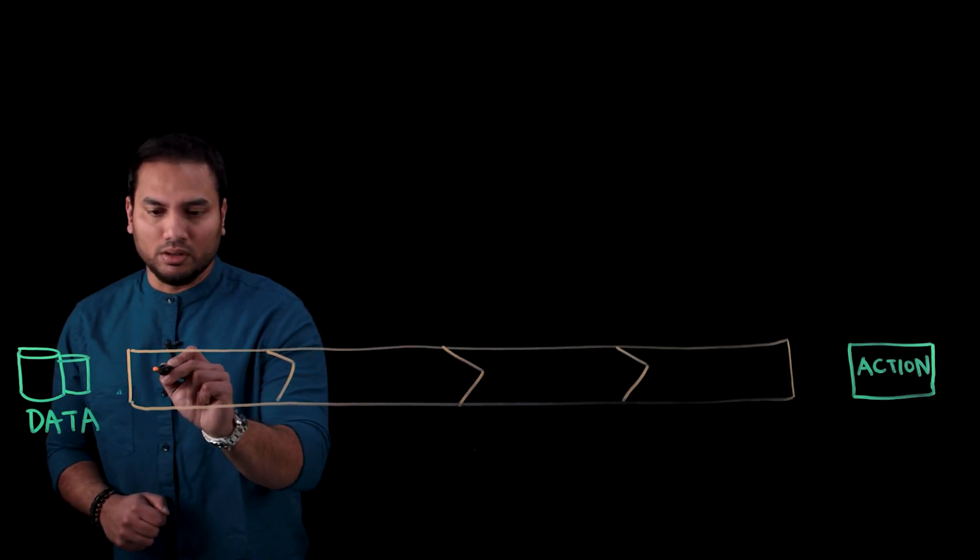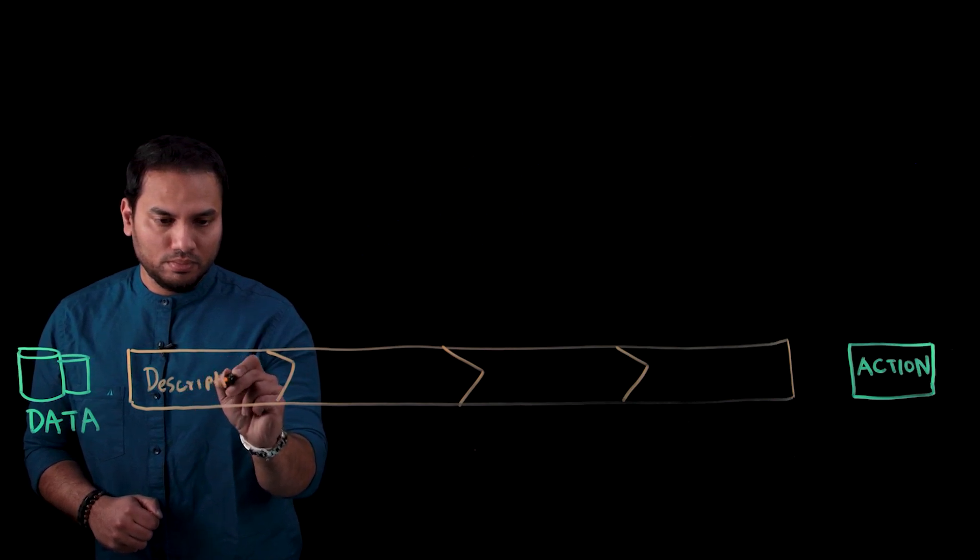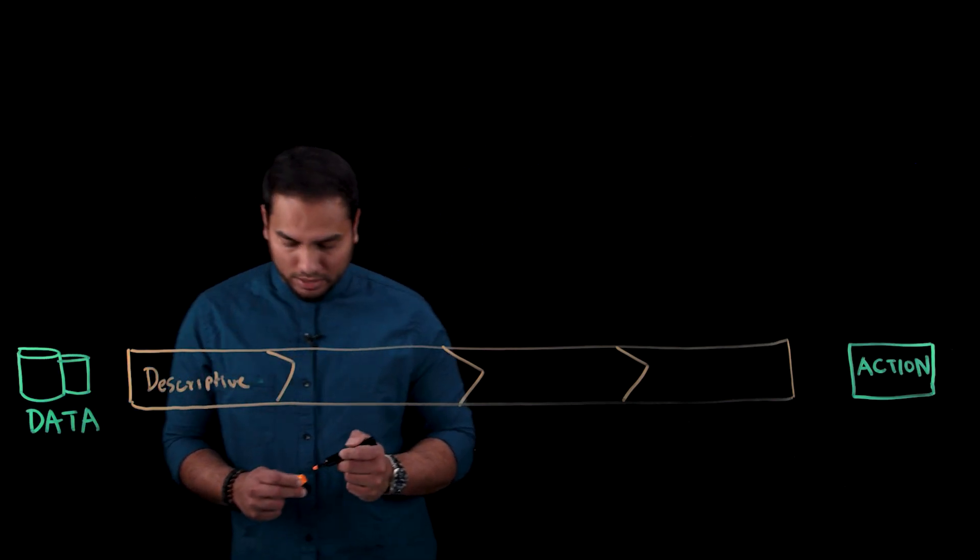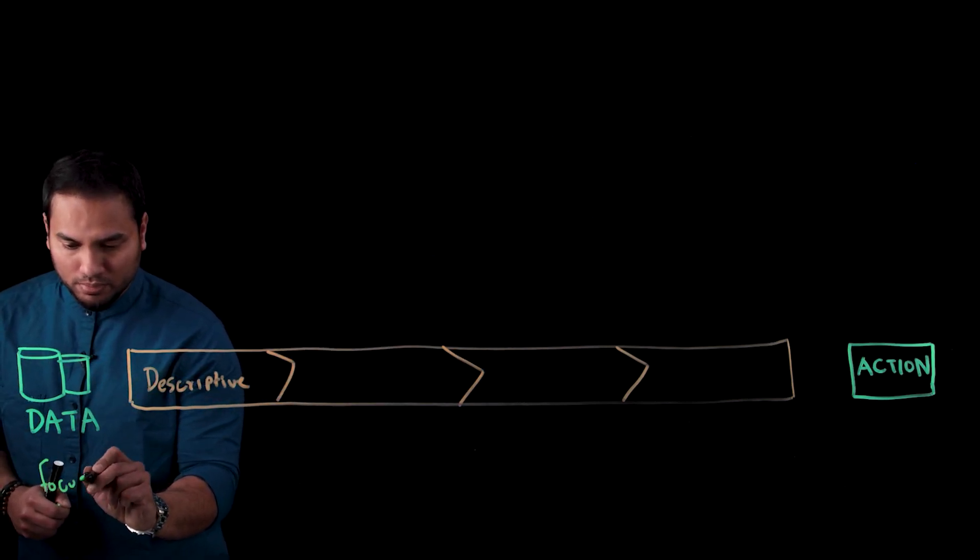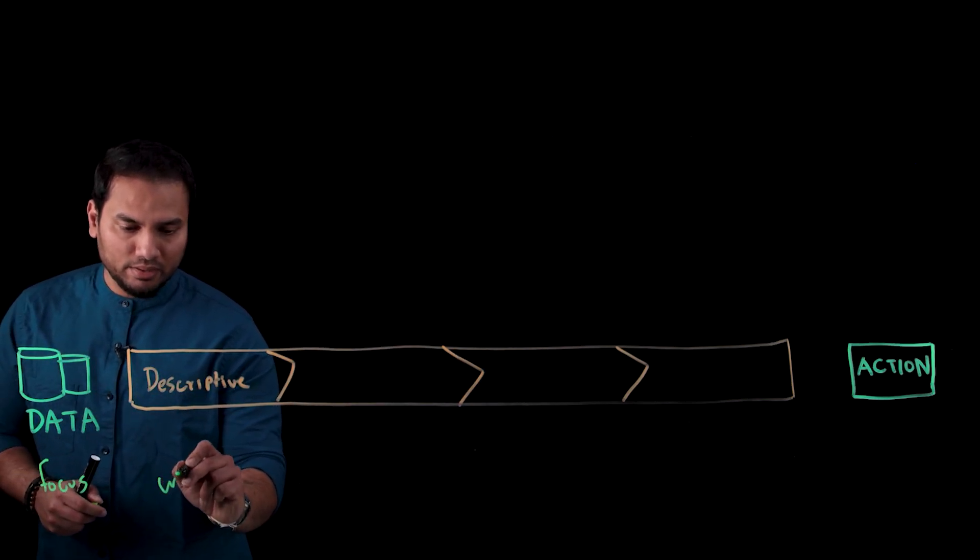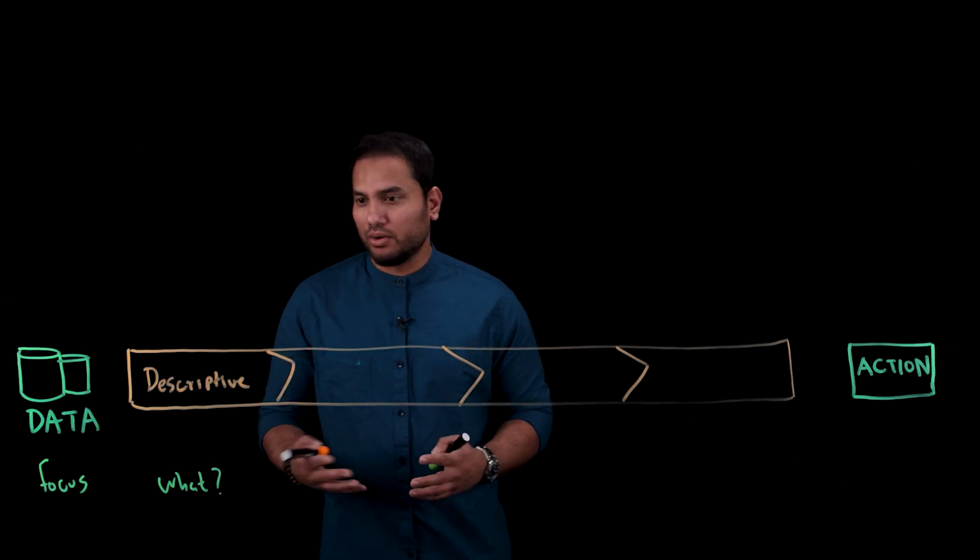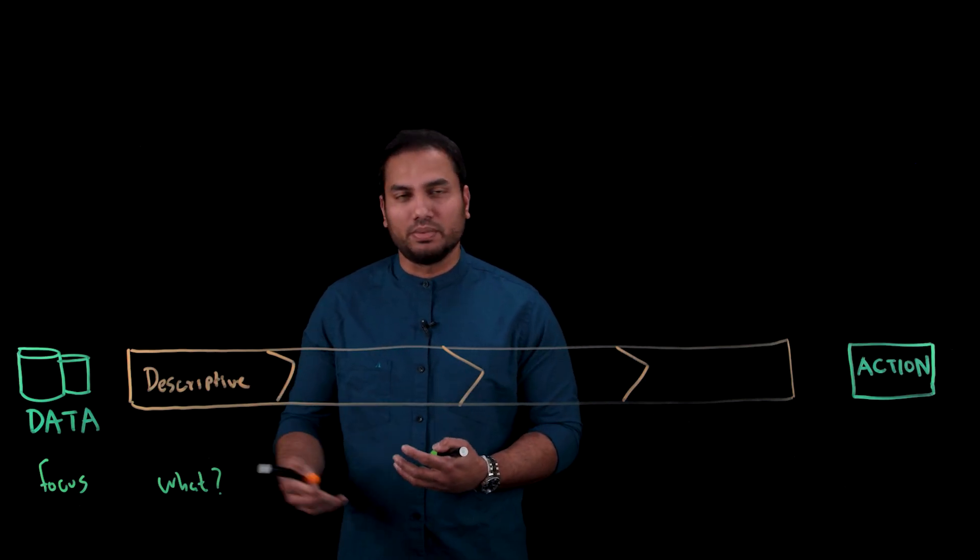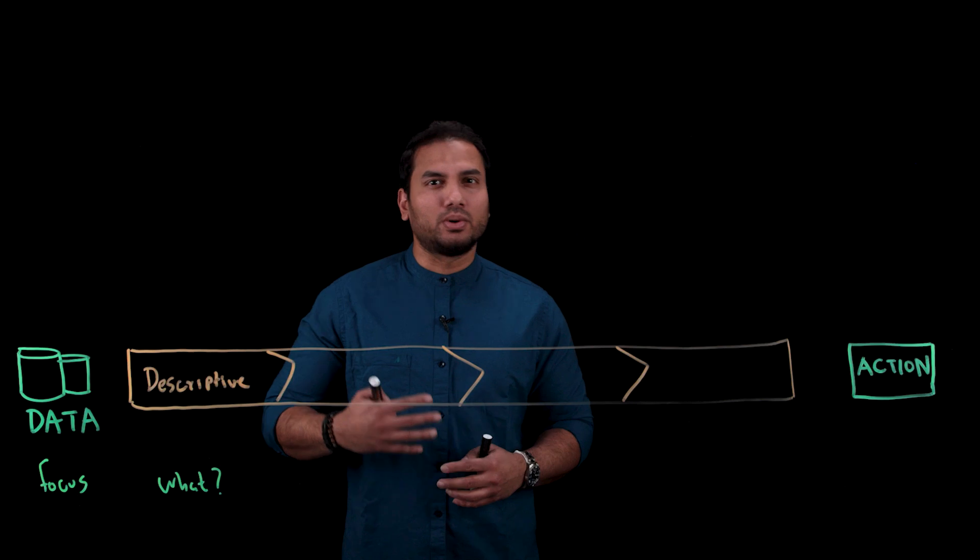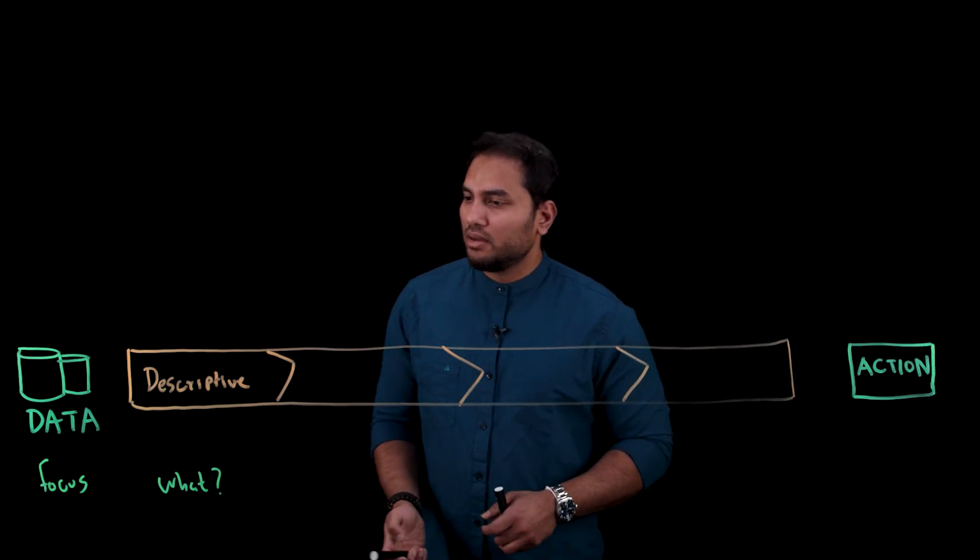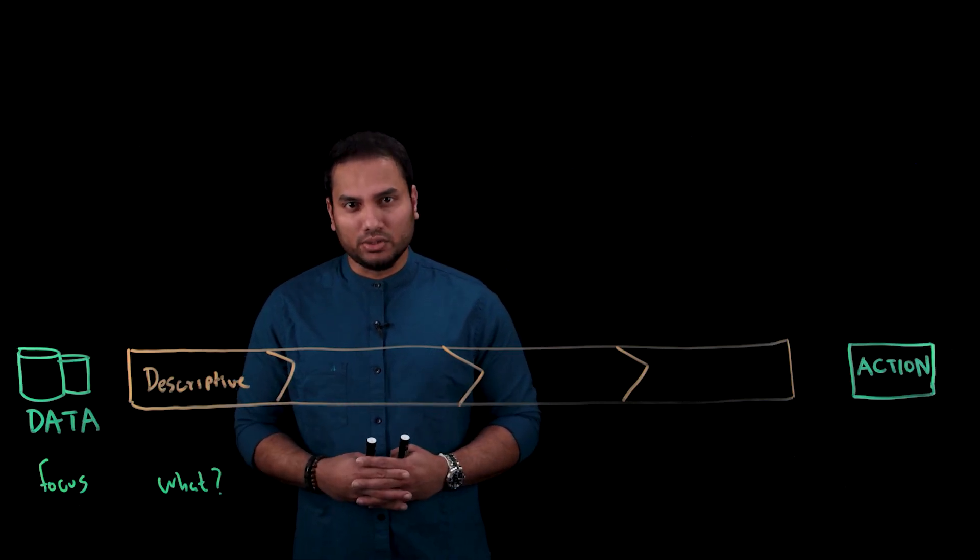And the first pillar is called descriptive analytics. And the focus here is on understanding what had happened with your data or your organization. So this is essentially a historical view into your business data. And typically, you represent these through dashboards, reports, visualizations, and so on. An example of a descriptive analytics type of question could be, what was my churn last quarter?